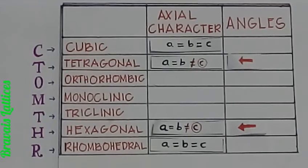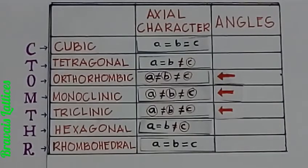The second and the second last box have the same axial character where c is different. The third, fourth, and fifth box have the same axial character where a, b, and c are all different.